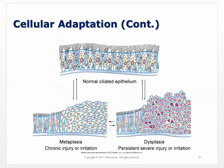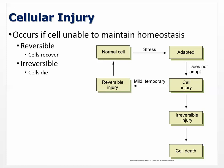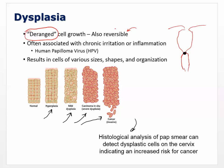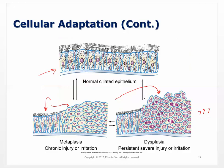This picture from the book shows normal ciliated epithelium, then metaplasia where the normal ciliated epithelial cells are being replaced by squamous cells, and then it advances to dysplasia — dysplastic cells appear, and the next step is probably some kind of carcinoma. Remember, though, dysplasia is reversible. If you have abnormal cells in your cervix, that doesn't necessarily mean they'll become cancerous, but they might go one way or the other.